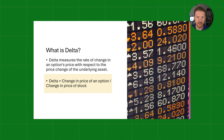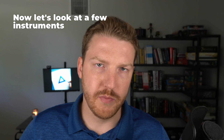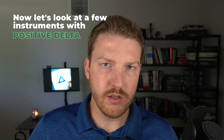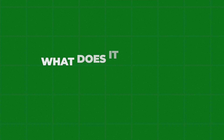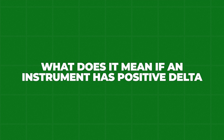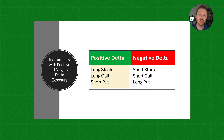This formula is like a snapshot for the option's price sensitivity at any given moment in time. Now let's look at a few instruments with positive Delta and a few with negative Delta. If an instrument has positive Delta, that means that if the underlying asset's price goes up, this instrument's price should also go up.